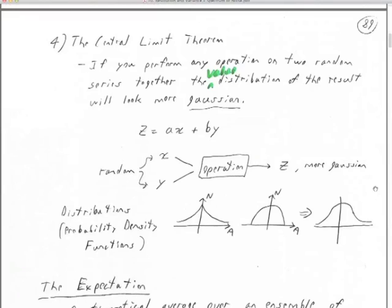Your data Z equals A times the X time series plus B times the Y time series. You can start with two perfectly random X's and Y's, combine them into Z, and Z is going to be more Gaussian than the inputs. You can even keep combining mathematical sources of random numbers — the more you combine, the more Gaussian it is. That's actually how to get a random number set with a Gaussian distribution.